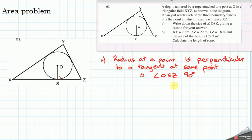Now, it's the second part of this question I find is most interesting. And the reason I've got a copy to draw on here is being able to use the information that XY is 20, XZ is 22 meters, YZ is 18 meters. And they know that the area of this field is 169.7 meters squared.